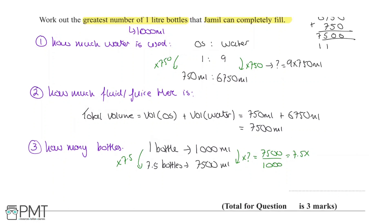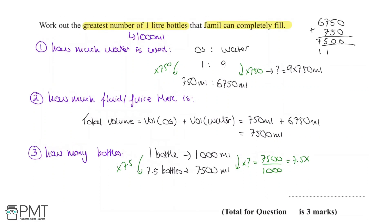But the question said work out the greatest number of 1 litre bottles that Jamil can completely fill. He can't completely fill the eighth bottle from 0.5, so it is going to be 7 complete bottles. Round down to 7 as not enough for 8. Therefore our final answer is 7 bottles.